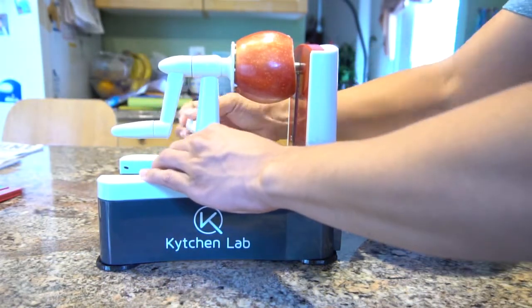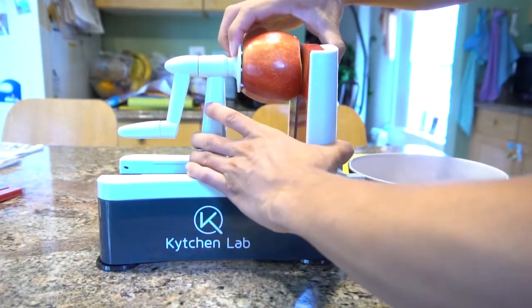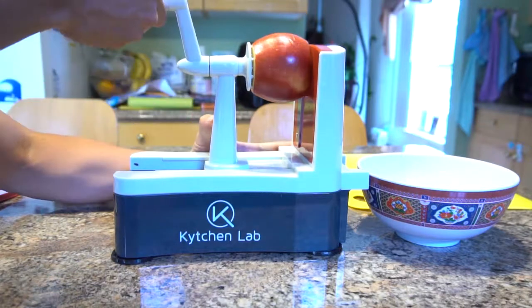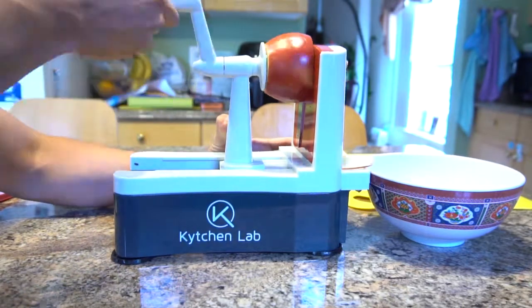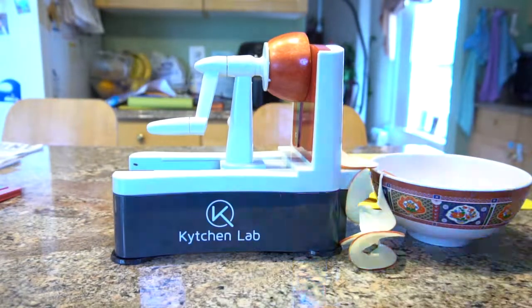Now unlock the lever, press the apple up against the blade on the other side, and rotate the handle clockwise while pressing gently towards the blade. Make sure you have a bowl ready on the other side to put the cut fruit into.